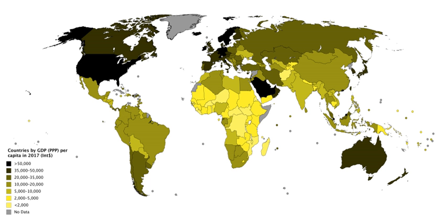Total factor income measures the value of GDP at factor prices. The difference between basic prices and final prices — those used in the expenditure calculation — is the total taxes and subsidies that the government has levied or paid on that production. Adding taxes less subsidies on production and imports converts GDP at factor cost to GDP at market prices.